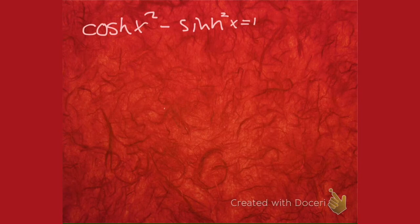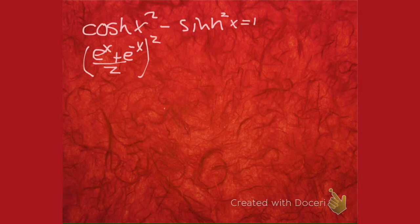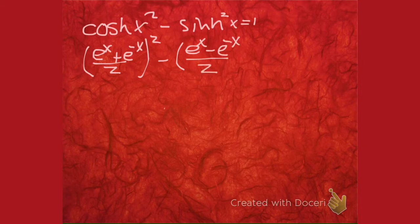I suppose we should go and rewrite those guys in their e form. The cosine hyperbolic, that's e to the x plus e to the minus x over 2. Is that true? And then the sine is e to the x minus e to the minus x over 2.